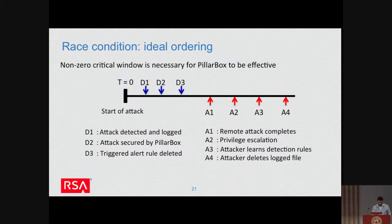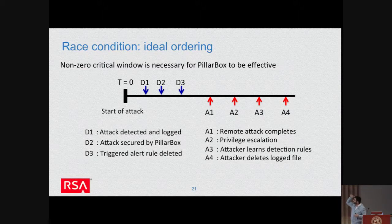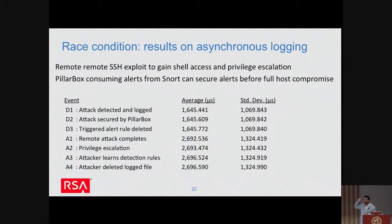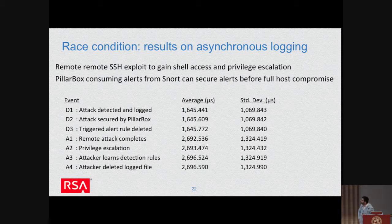The ideal ordering of events: the blue ones correspond to what Pillar Box does as a defense — syslog detects and logs something, Pillar Box secures it, and so on. The red part is what the attacker does once he has full access to the host machine. In a more asynchronous setting, we simulated an attack using an SSH exploit where the attacker gains shell access and then performs privilege escalation to try to attack Pillar Box. We confirmed that we are essentially able to maintain the ideal event ordering, validated by average numbers and standard deviations.